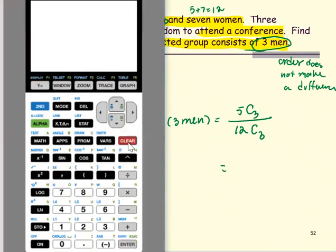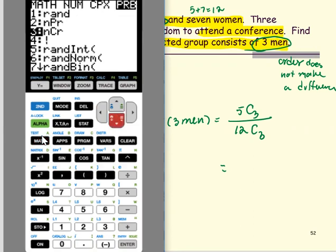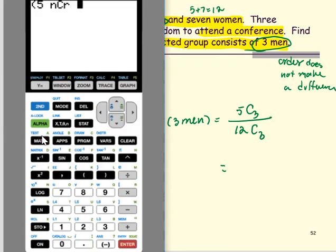I'm going to clear the previous calculation. The numerator, put parentheses around. So 5, and select the math, the PRB, select option 3. The R is 3 because 3 men from the group of the 5 men, divided by the denominator.